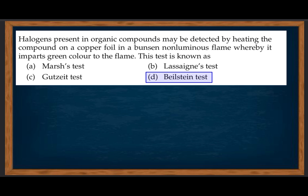Halogen present in an organic compound may be detected by heating the compound on a copper foil in a Bunsen non-luminous flame, whereby it imparts a green color to the flame. This test is known as the Beilstein test.